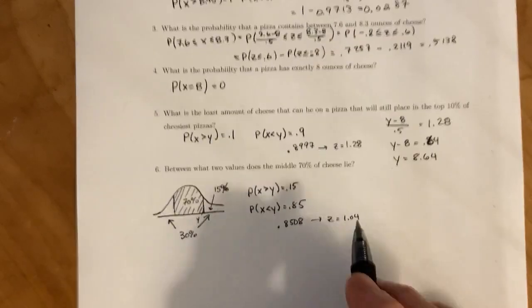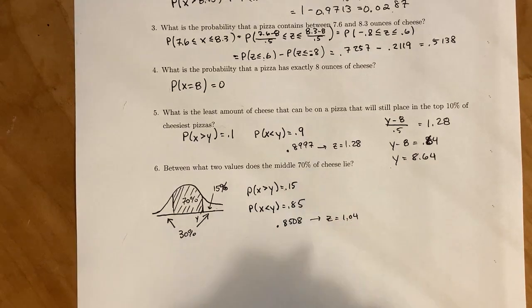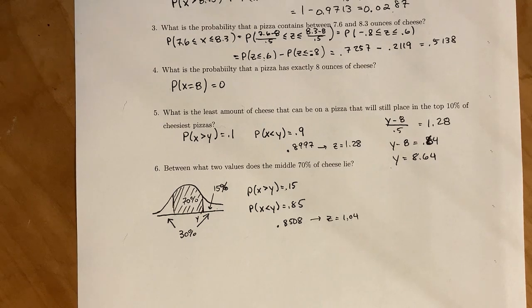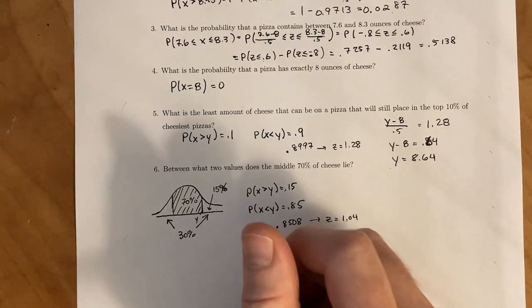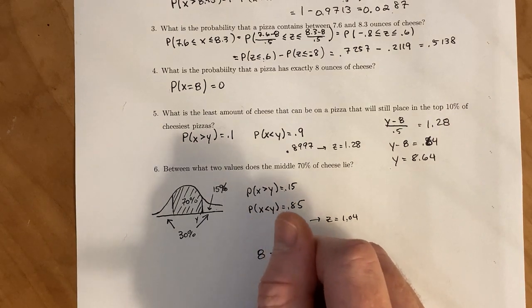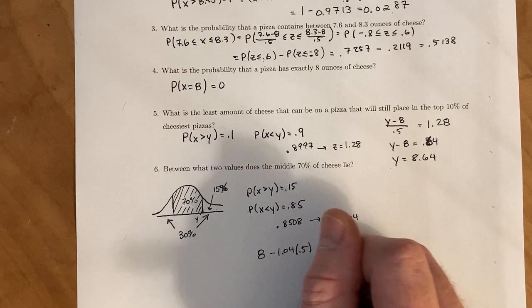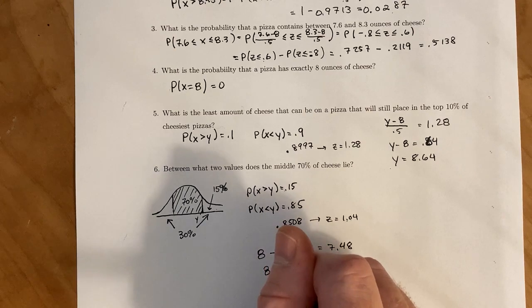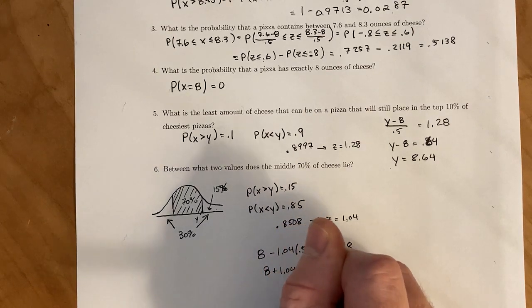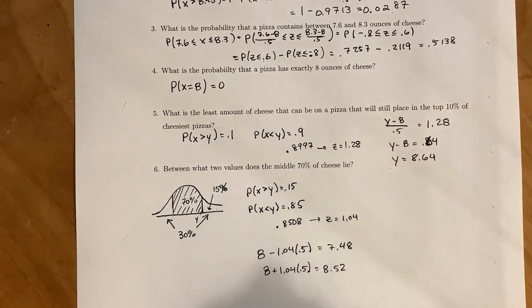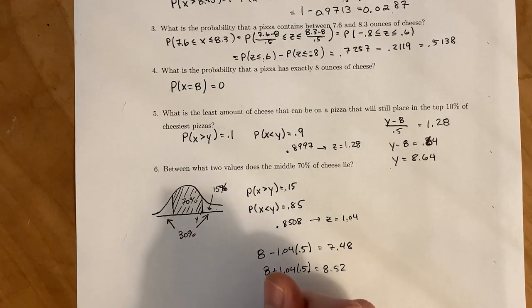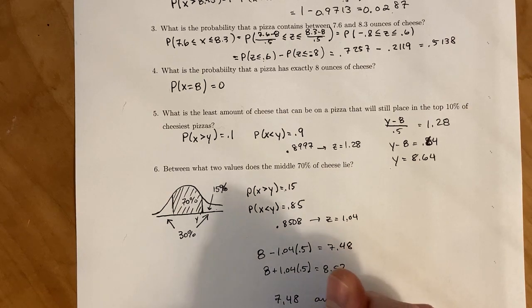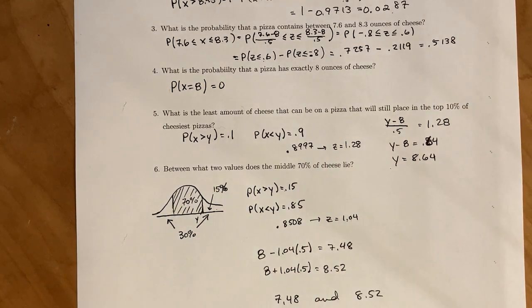We know that when you are 1.04 standard deviations below and above the mean, that is going to be 70%, the middle 70% of cheese. So on the low side, we have 8 minus 1.04 times 0.5 equals 7.48. And on the upper side, we have 8 plus 1.04 times 0.5, which is 8.52. So the middle 70% lands between here and here, number of ounces of cheese.